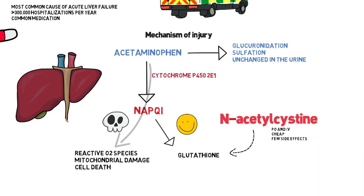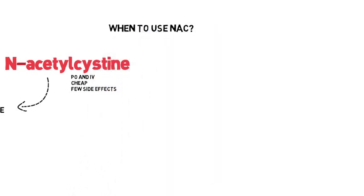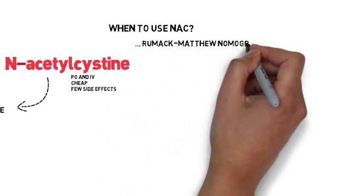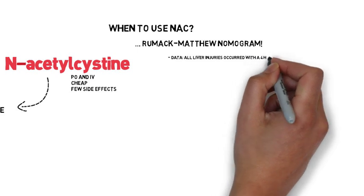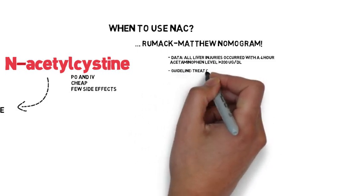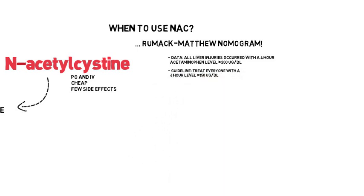So when should we use it — should we give it to everyone? Back in the 1970s, two toxicologists, Rumack and Matthew, developed a nomogram to help determine when NAC should be used. In the initial studies, all of the patients who developed liver injury were found to have acetaminophen concentrations correlating to a level of at least 200 micrograms per milliliter at four hours after ingestion. Somewhat arbitrarily, the guideline authors decided to treat everyone with a level greater than 150 micrograms per milliliter at four hours, to be sure they were picking up everyone with a clinically important ingestion.